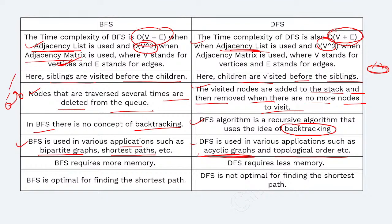BFS requires more RAM memory because it inserts nodes into the queue one by one. DFS uses less memory because elements are pushed to the stack and deleted when not required.